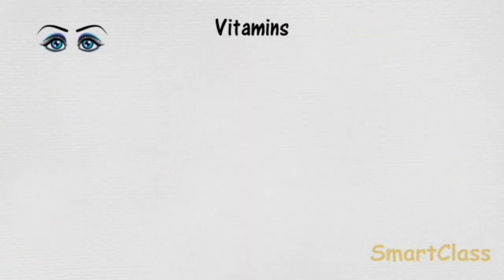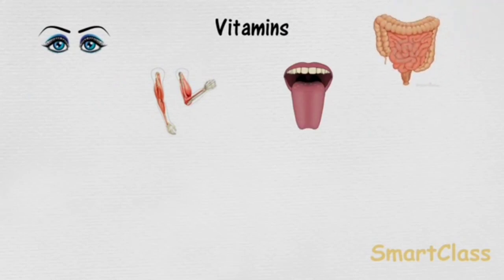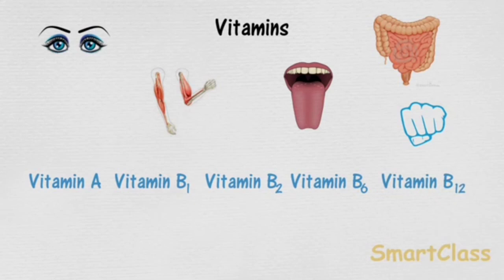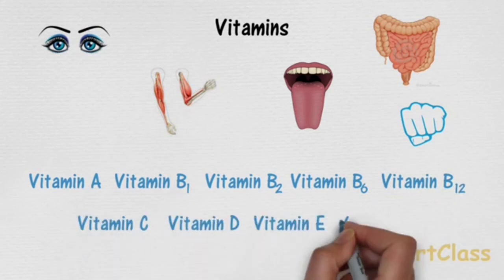Next, vitamins. Vitamins help in protecting our body against diseases. Vitamins also help in keeping our eyes, bones, teeth, and gums healthy. Vitamins are of different kinds known by different names: vitamin A, B1, B2, B6, B12, C, D, E, and K.